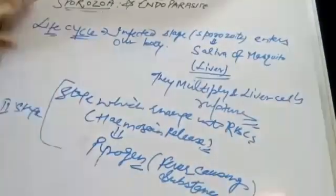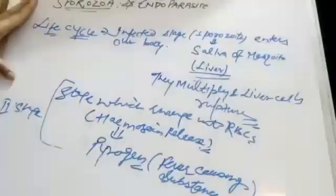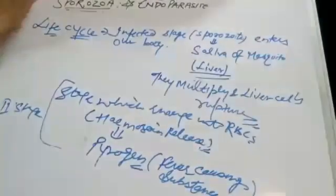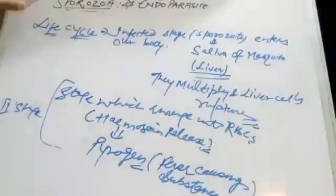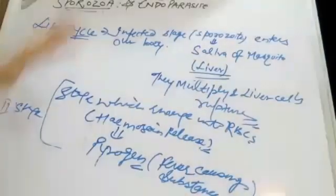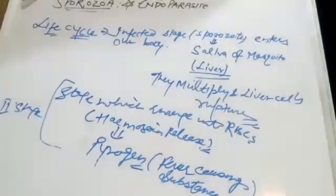That is all about Plasmodium and its life cycle. Our sporozoa topic is now complete. Now we will discuss the third part, which is slime molds and decomposers. Thank you all.